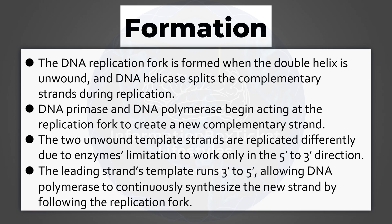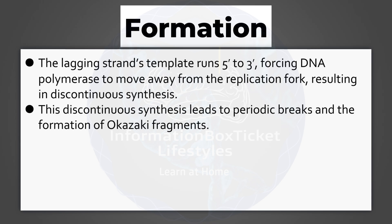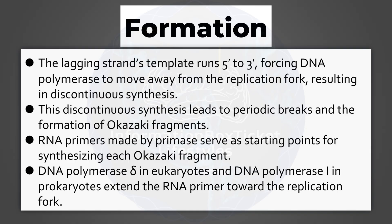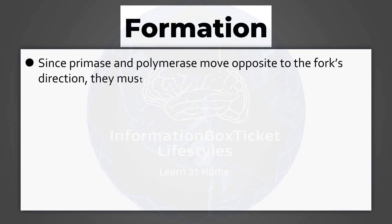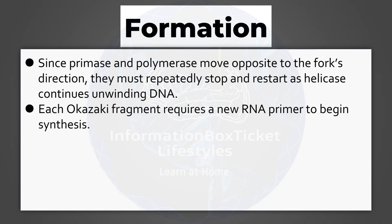The leading strand's template runs 3' to 5', allowing DNA polymerase to continuously synthesize the new strand by following the replication fork. The lagging strand's template runs 5' to 3', forcing DNA polymerase to move away from the replication fork, resulting in discontinuous synthesis. This discontinuous synthesis leads to periodic breaks and the formation of Okazaki fragments. RNA primers, made by primase, serve as starting points for synthesizing each Okazaki fragment. DNA polymerase delta in eukaryotes and DNA polymerase I in prokaryotes extend the RNA primer toward the replication fork. Since primase and polymerase move opposite to the fork's direction, they must repeatedly stop and restart as helicase continues unwinding DNA. Each Okazaki fragment requires a new RNA primer to begin synthesis.